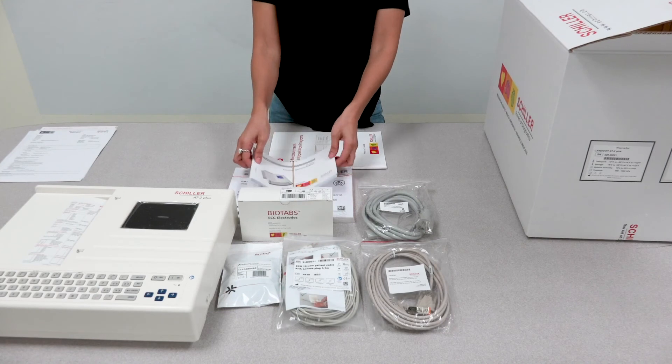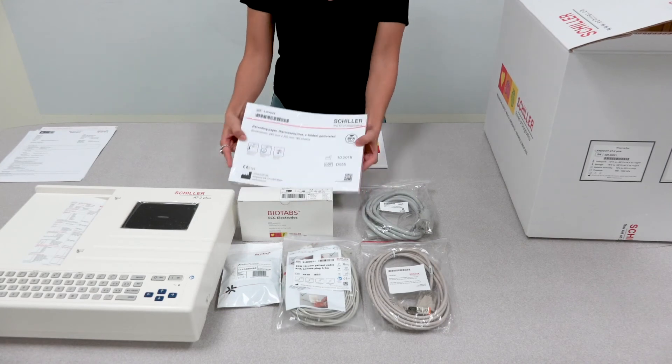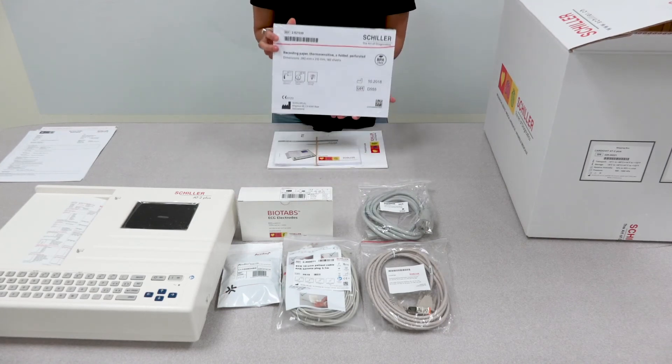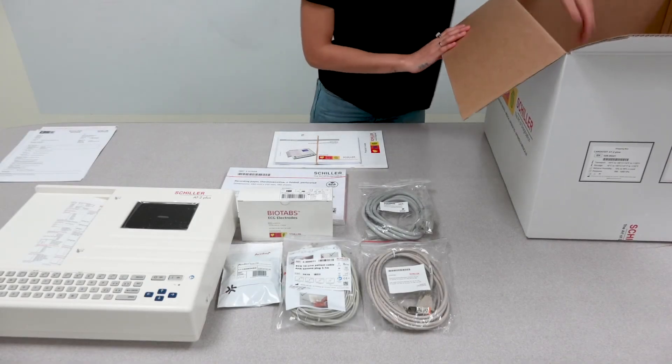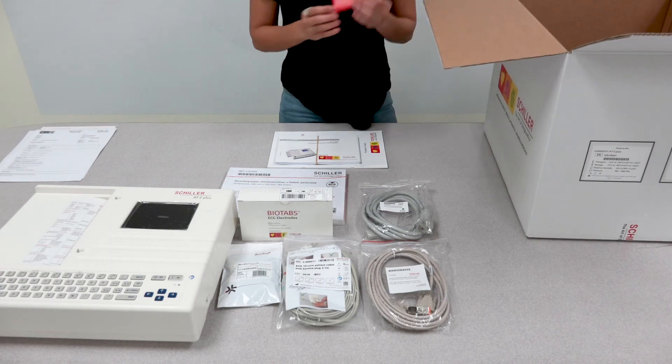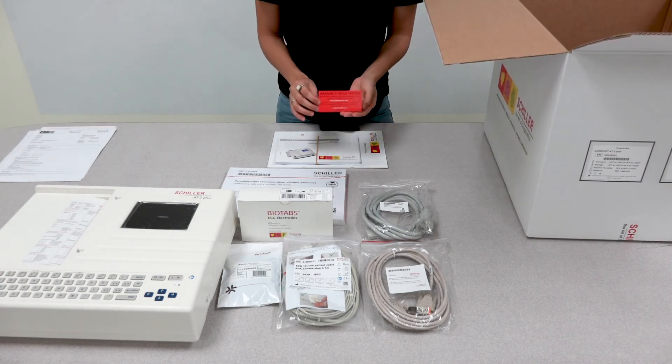It is important to note that the thermoprint paper that comes with the unit is letter size. In the box you will also find the warranty registration card, which indicates the instructions on how to properly register your unit.